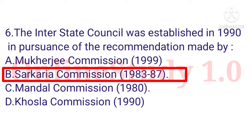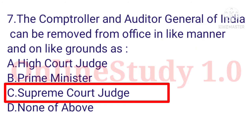The Interstate Council was established in 1990 in pursuance of recommendations made by the Sarkaria Commission (1983–87). Question number 7: The Comptroller and Auditor General of India can be removed from office in like manner and on like grounds as a Supreme Court judge.